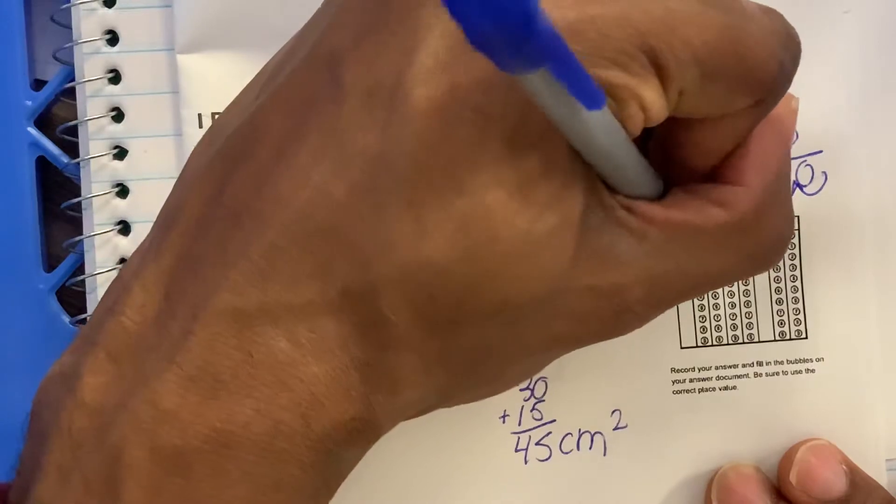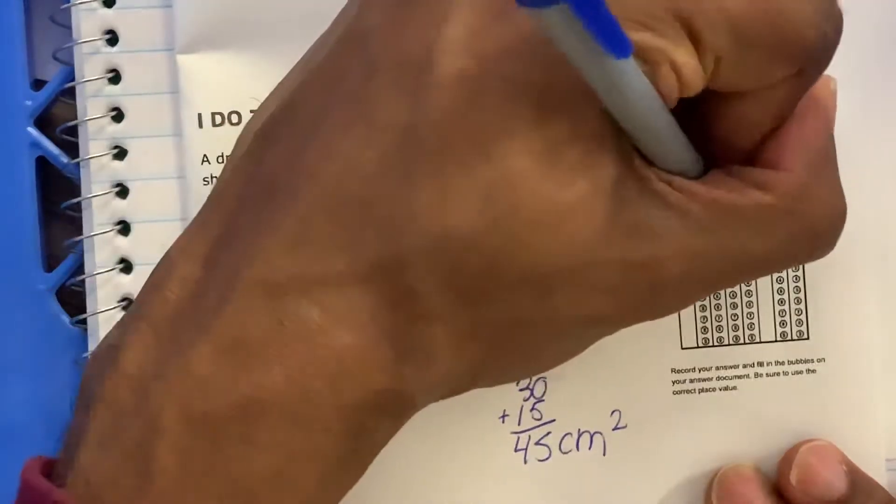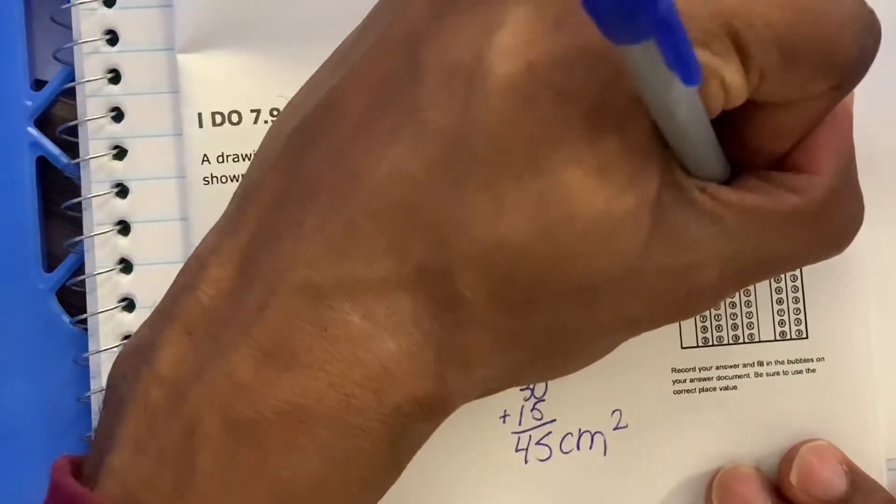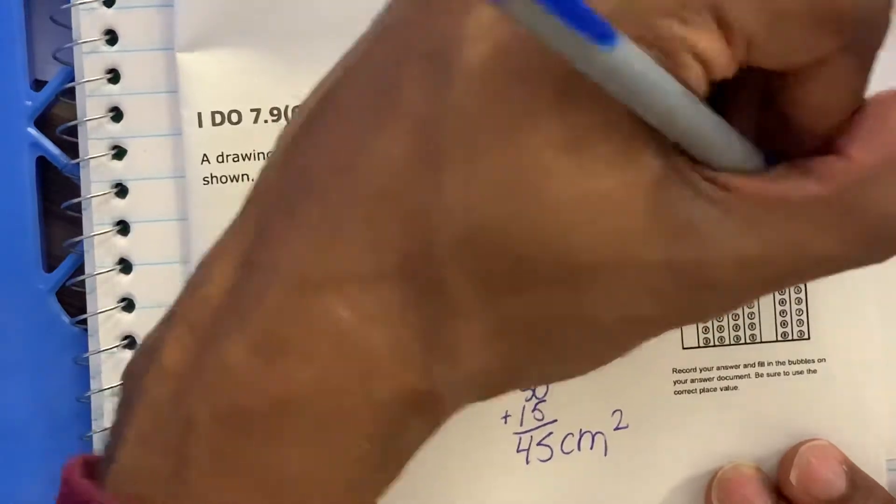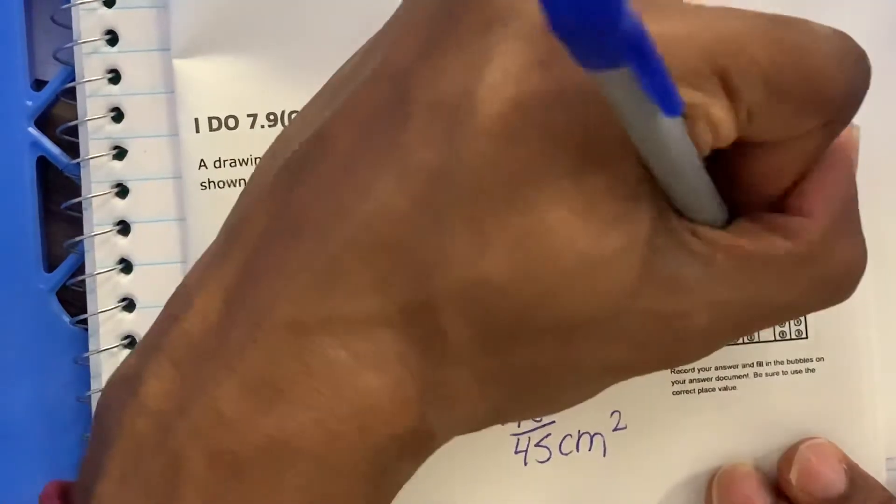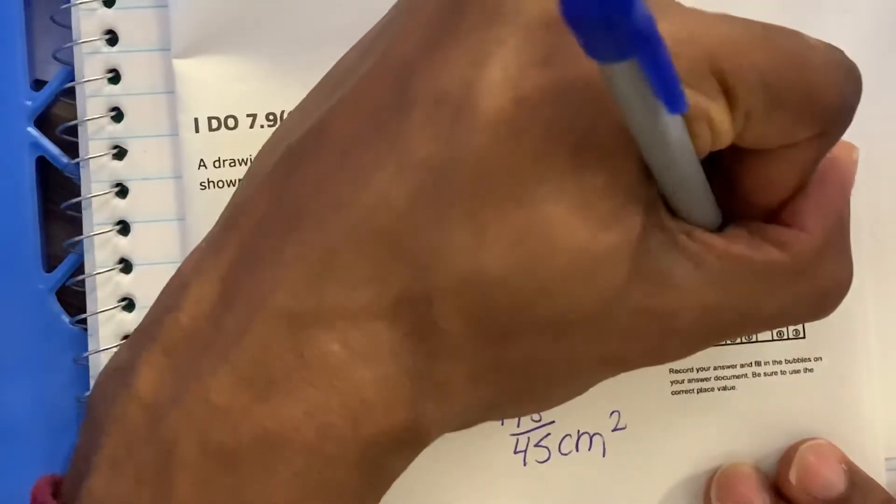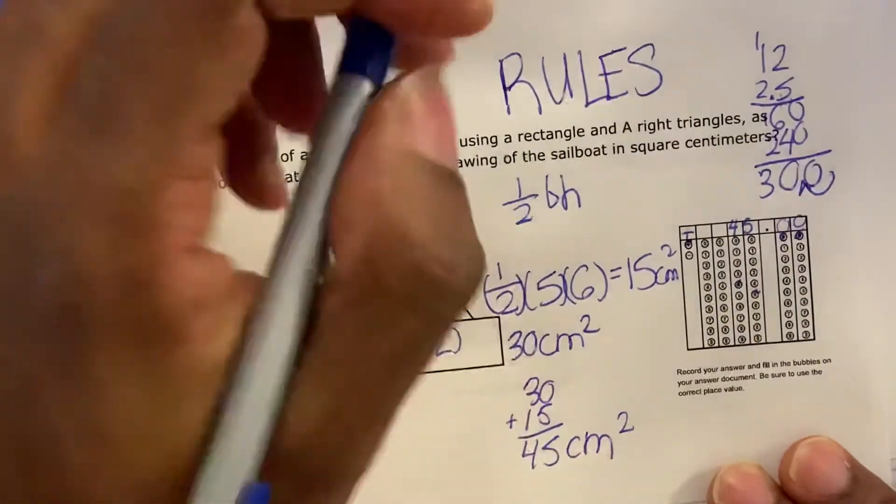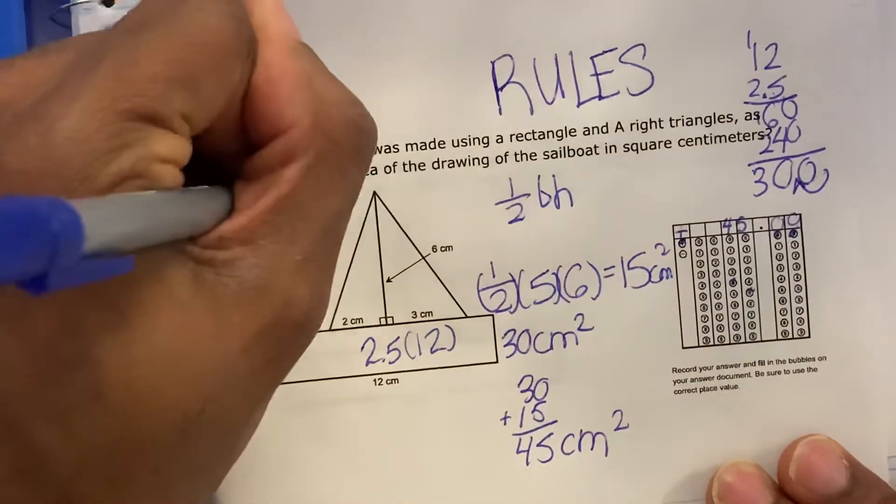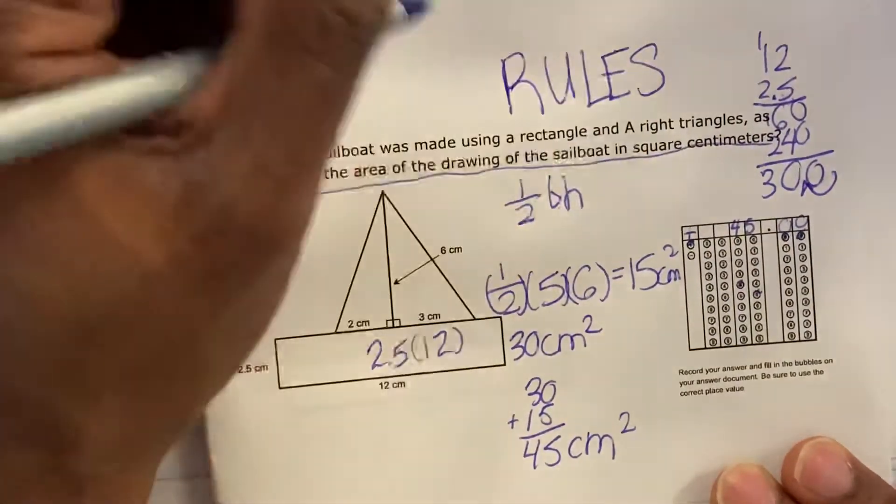All right, so it's going to be positive negative and then 4500. I'll bubble in the zeros. I bubble in the four and the five. All right, so what is the area of the sailboat? Drawing of a sailboat.